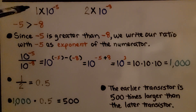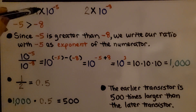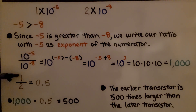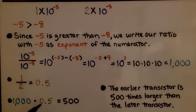We write the ratio of one over two — since the negative fifth is the greater one, the one is on top and the two is on the bottom. That is five tenths. We multiply one thousand times five tenths, and it's equal to five hundred. The earlier transistor is five hundred times larger than the later transistor.